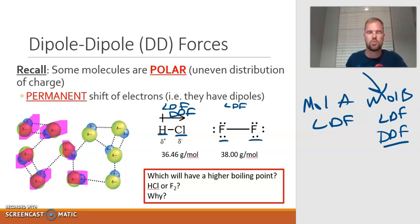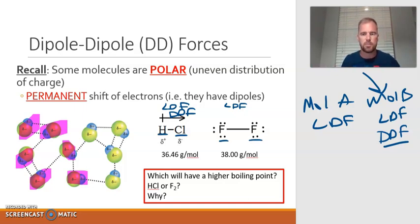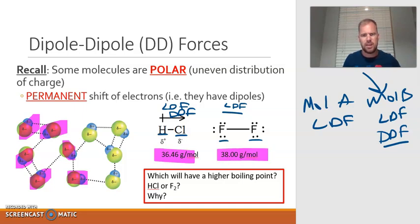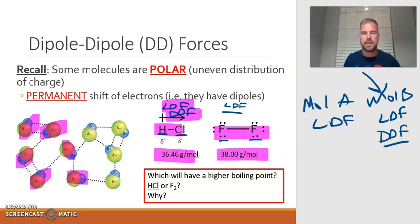If you take a look at a fluorine molecule, it's two fluorines bonded to each other, so the electrons are going to be evenly dispersed. So that molecule only has London dispersion forces. They both have relatively the same mass and surface area, so how do you tell which one has the higher boiling point? The fact that hydrogen chloride has two intermolecular forces would indicate it would be predicted to have the higher boiling point because it would be stronger.